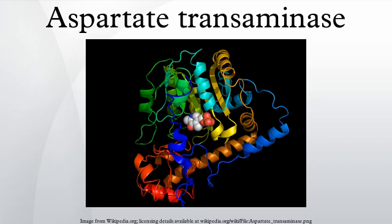The large domain, which includes residues 48 to 325, binds the PLP cofactor via an aldimine linkage to the epsilon-amino group of Lys-258. Other residues in this domain — Arg-222 and Arg-225 — also interact with PLP via hydrogen bonding. The small domain consists of residues 15 to 47 and 326 to 410 and represents a flexible region that shifts the enzyme from an open to a closed conformation upon substrate binding. The two independent active sites are positioned near the interface between the two domains.